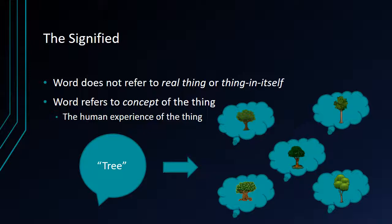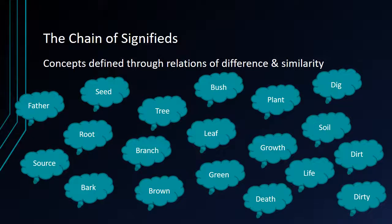On the side of the signified, the point that Saussure stresses is that the word does not refer to the real thing or the thing in itself — it does not refer to an actual tree — but again to our concept of the thing, to the human experience of the thing. And this is why, if someone says the word 'tree,' each one of us is going to have a different concept, a different understanding of what that tree means. And just as there is a chain of signifiers where all the individual signifiers are linked and differentiated by the difference of their spelling and sound, so too is there a chain of signifieds.